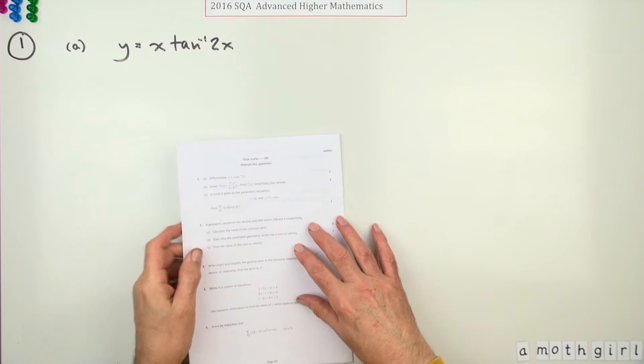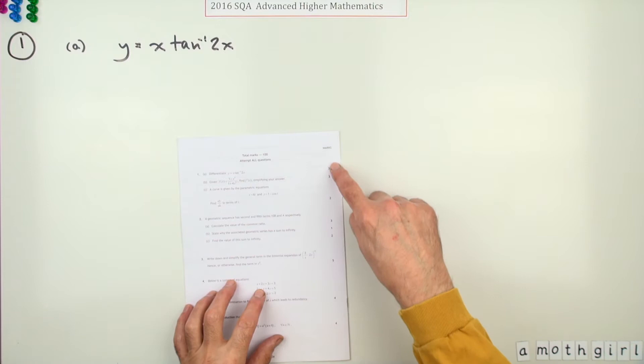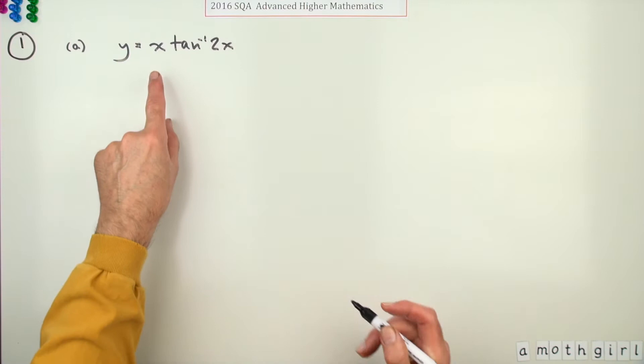So number one then from the 2016 Advanced Higher Maths. Standard sort of differentiation question but eight marks to kick this off, three parts. Part A, now for three marks, differentiate this.